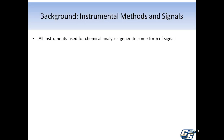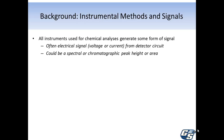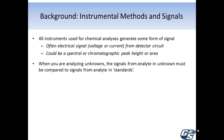Instrumental methods of analysis require calibration, and they have signals — signals that usually can't simply be related to the analyte concentration or amount by an equation. The signals are often something electrical, like the voltage or current from a detector's circuit. The signal could be the height or the area of a peak in a chromatogram or a spectrum. The signal from the analyte in the unknown must be compared to signal from the analyte in standards.